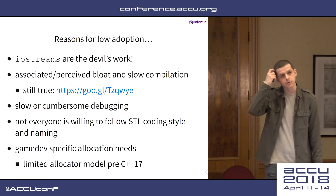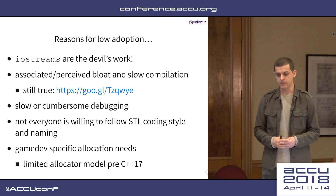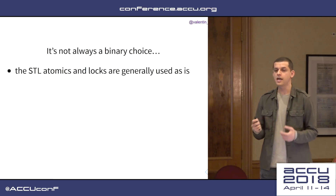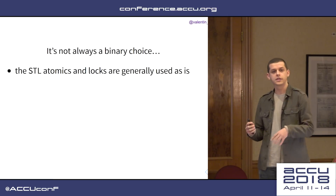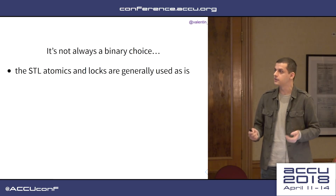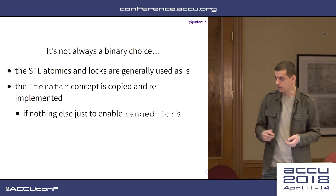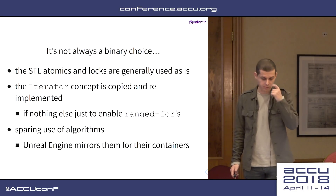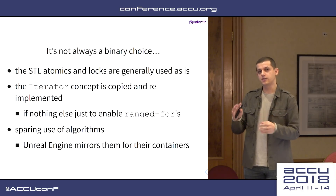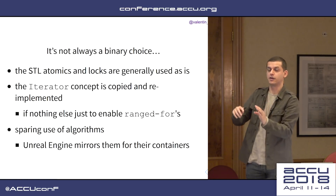More importantly, game dev has very specific allocation needs — this was the Achilles heel of STL. The std::allocator pre-C++11 was weird and stateless. They added the PMR polymorphic allocator in C++17, so there's more support now, but it was lackluster. It's not always a binary choice — you can mix and match. Even if you don't use containers, you can use other parts. Atomics and locks are generally well received and used as-is. The iterator concept is good; people reinvent it just to do range-for. Algorithms are so-so.